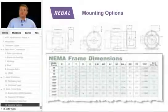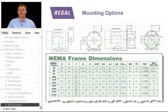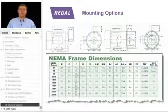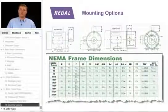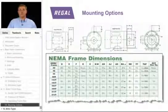The third digit in the NEMA T frame motors tells us the distance between the mounting foot holes in the bottom of the base. So it is possible to switch frame sizes if you understand where the center of shaft is. On T frame motors, a 143 T or a 145 T frame may be used if the motor is punched for the holes in the bottom of the base.